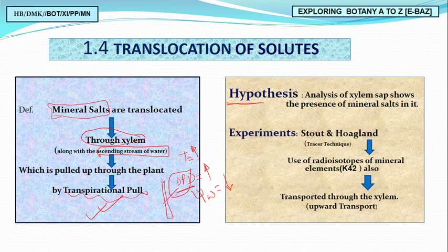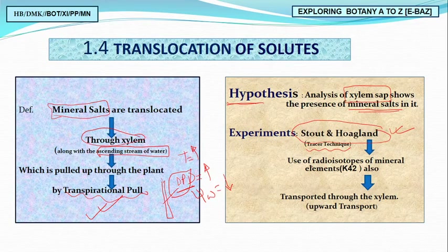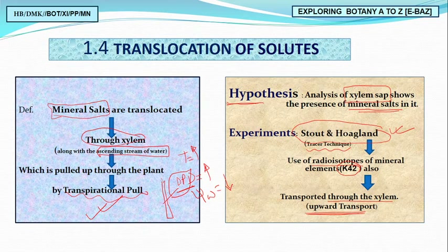Scientists first hypothesized that xylem sap — the liquid passing through xylem — contains water and mineral salts. This was experimentally verified by Stout and Hoagland using the tracer technique with radioactive K⁴² (potassium-42). By tracing this radioactive potassium in the xylem sap, they confirmed that only xylem is responsible for transporting mineral salts upward through passive (transpiration-driven) transport without consuming ATP.